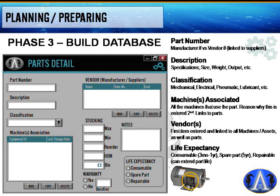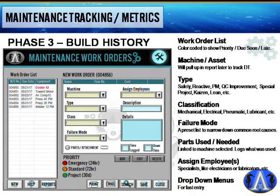Life expectancy helps classify parts as consumables (three months to a year), spare parts, or repairable. This filtering helps with cost analysis later. For maintenance work orders, this builds a history on machines, parts ordering, and downtime by area — the coding system's mapping reveals which areas have the most downtime. The work order list is color-coded by priority: due soon, late, or not yet closed.